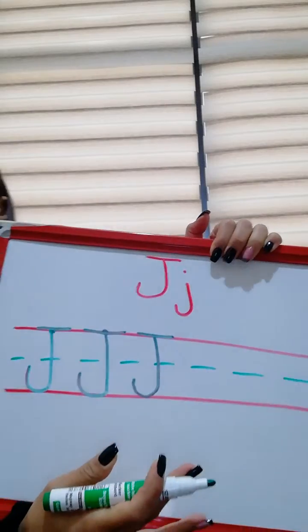Again, go straight down, turn, make a curve, to the left, then add a dot. So, this is uppercase J, and this is lowercase J.